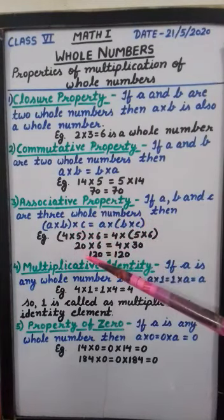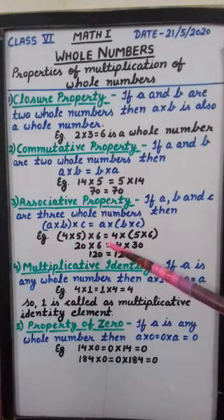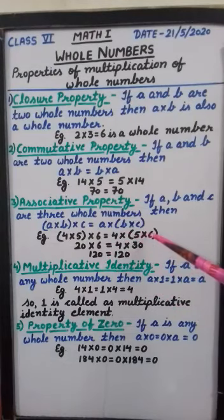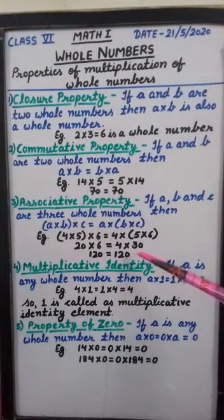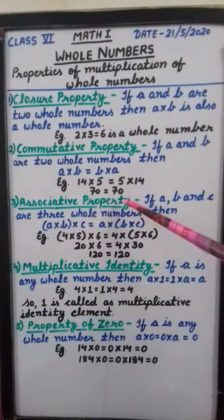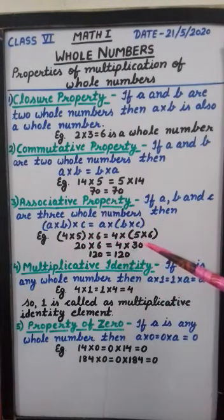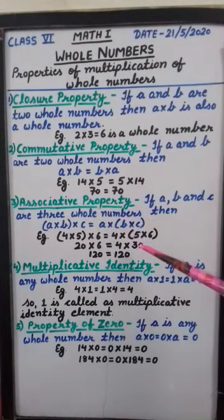Let's see the answers now. Solving the left side: four fives are twenty, and twenty multiply by six is one hundred twenty. On the right side: five into six is thirty, and thirty multiply by four is one hundred twenty. So we can see that the results are same — associative property is true for multiplication.